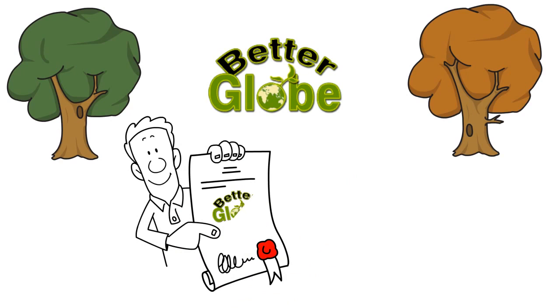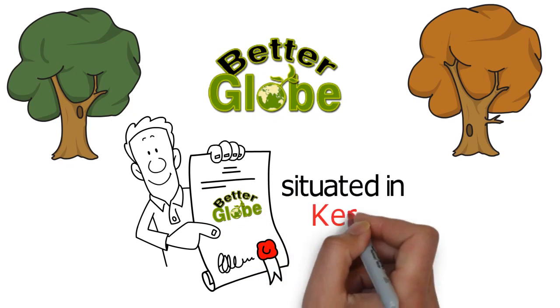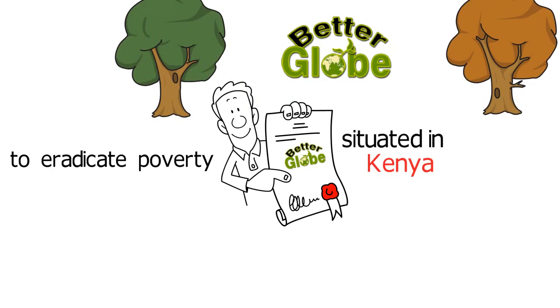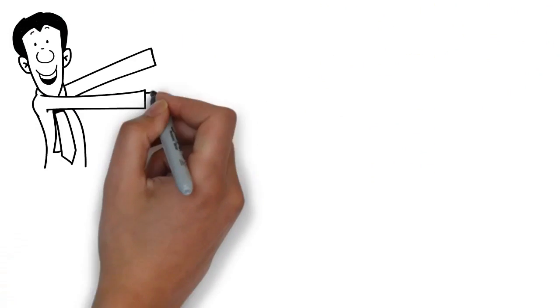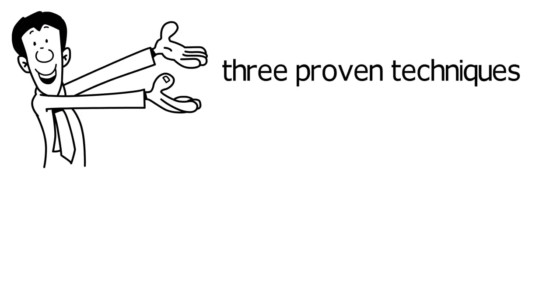Better Globe is an award-winning forestry company situated in Kenya with the main goal to eradicate poverty in Africa. They are doing that with three proven techniques.